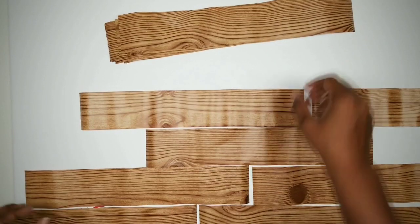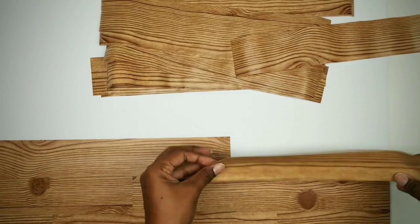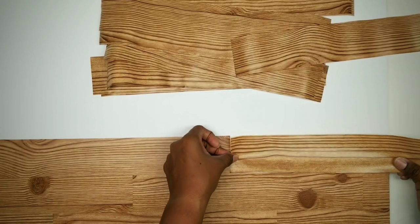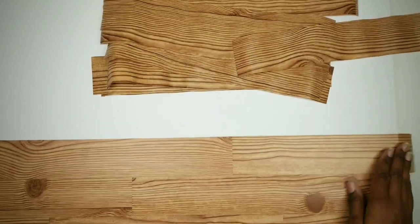Once you're pleased with the layout, it's time to apply. Peel off the backing from the contact paper and adhere the plank to the board. The contact paper is very forgiving so it's super easy to adjust the placement.